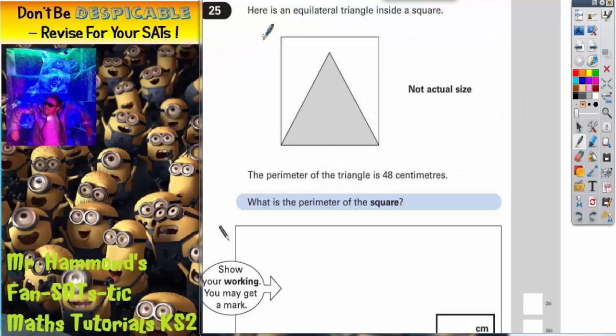Question 25: Here is an equilateral triangle inside a square. The perimeter of the triangle is 48. What is the perimeter of the square? Well, we do know that it is equilateral. Now equilateral means all three sides must be the same.